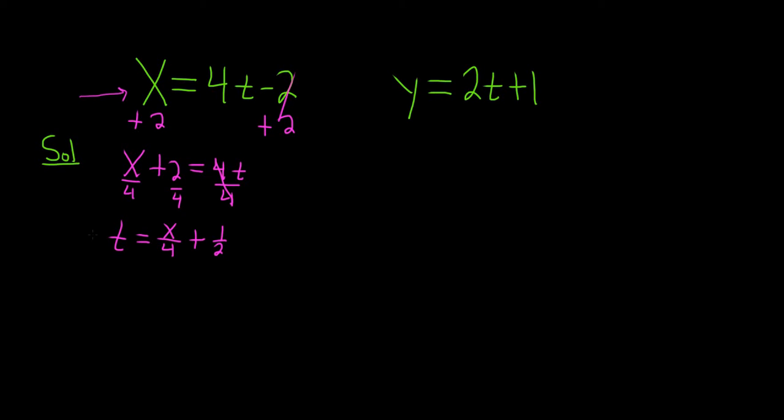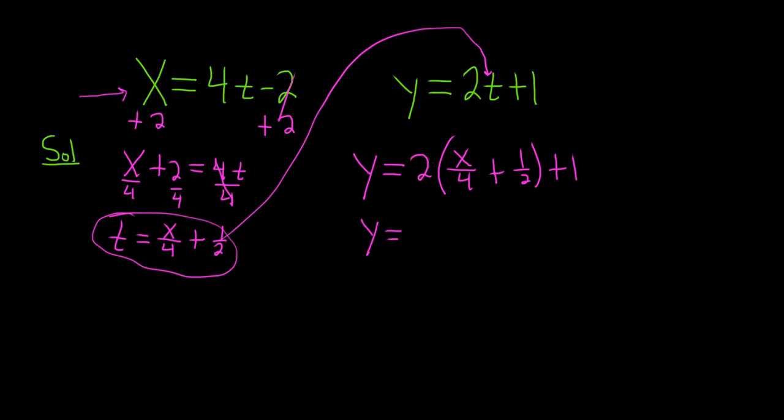The next step will be to simply take this and plug it in here for t. And that will give us our rectangular equation. So Y = 2 parentheses, t is X/4 + 1/2. And we still have a plus 1 hanging out over here. So Y is equal to, 2 times X/4 is going to be, well, the 2 goes into the 4 twice. So that'll be X/2.